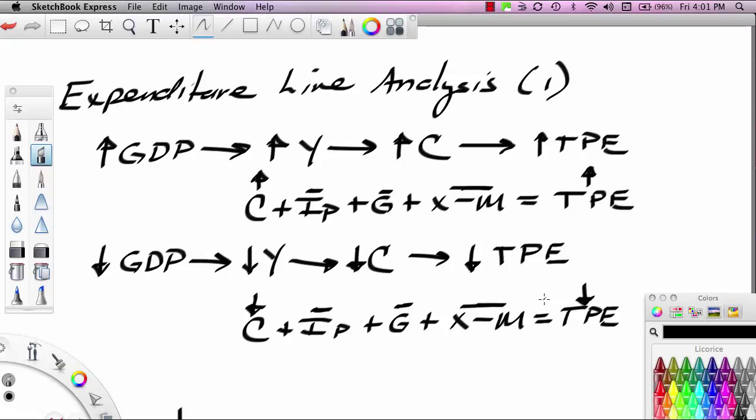Hi, this is Ron Sipsick and this is the first part of a four-part series on expenditure line analysis. We use the expenditure line model to examine how short-term or short-run changes in spending affect GDP and therefore affect unemployment.